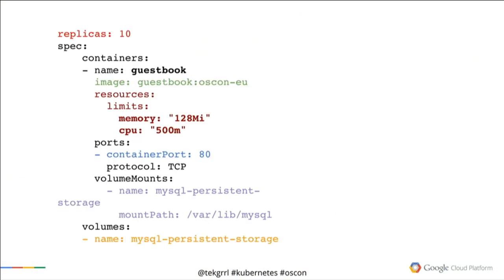Kubernetes provides a declarative language for scheduling pods, and that looks something like this. We can specify a number of replicas — a number of instances of this pod that we want. We can also specify the name, the container image we want to use, and resource limits in terms of CPU and memory. We can specify configuration information like port numbers, and also volume mounts — volumes that can be accessed by the containers within the pod.